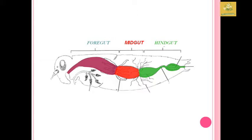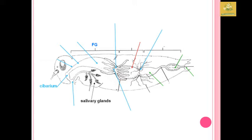In the foregut, the components comprise the salivary glands, cibarium, salivarium, pharynx, esophagus, crop, and proventriculus.